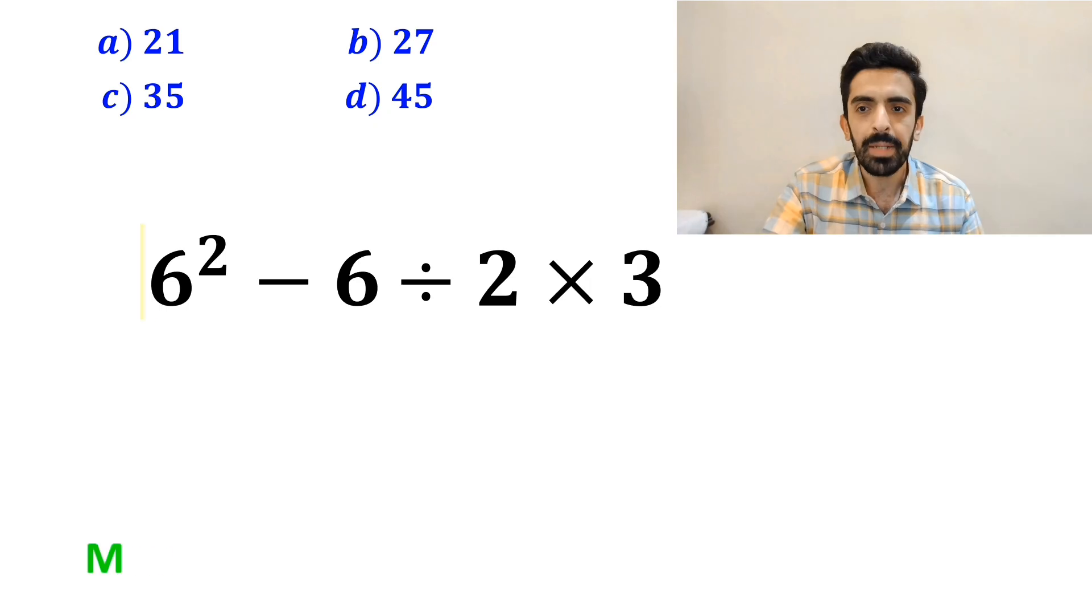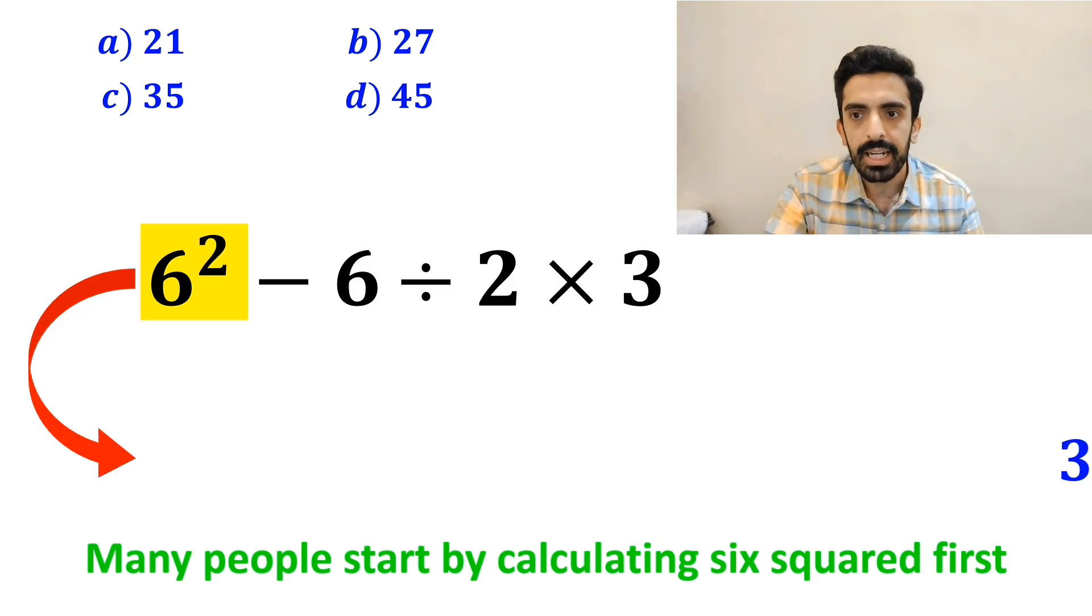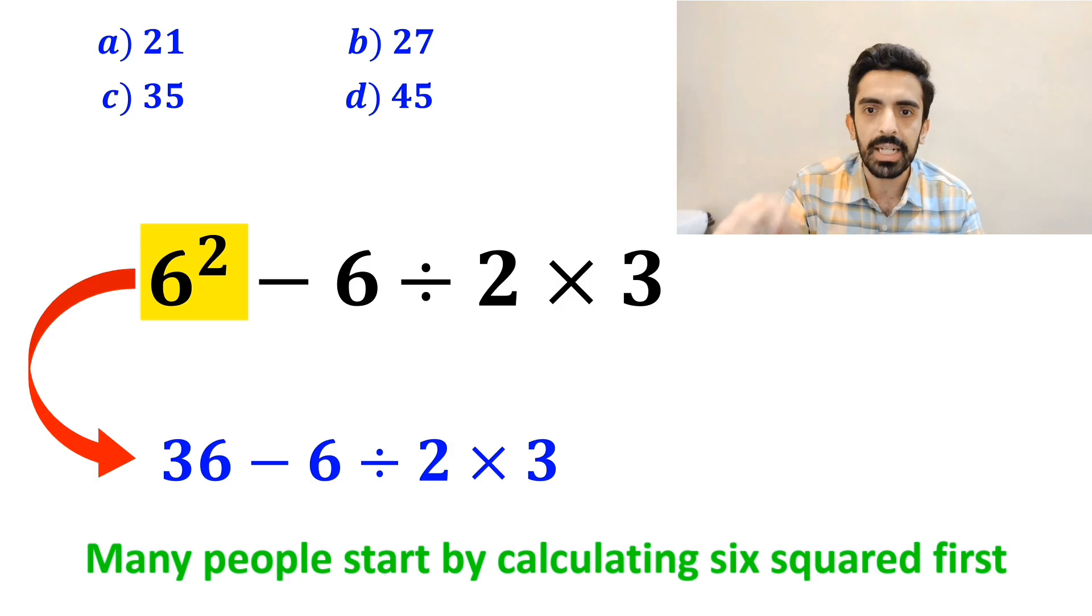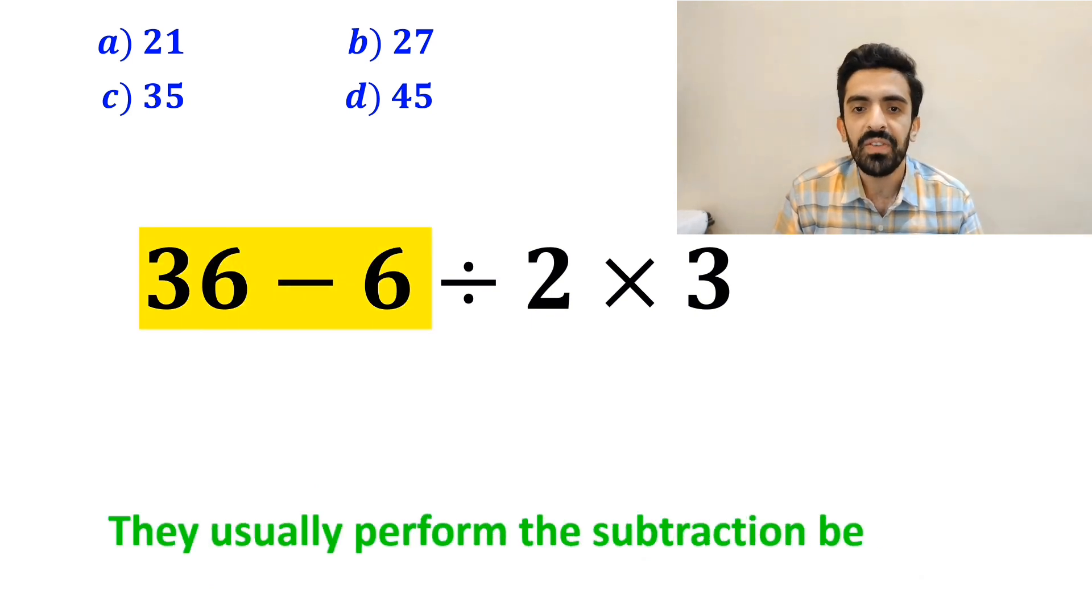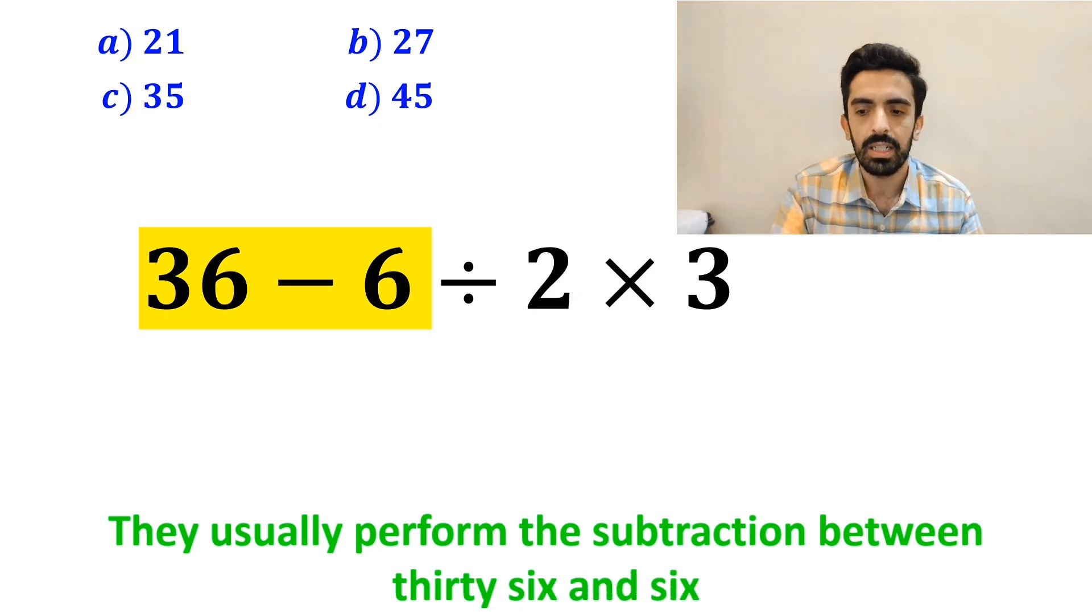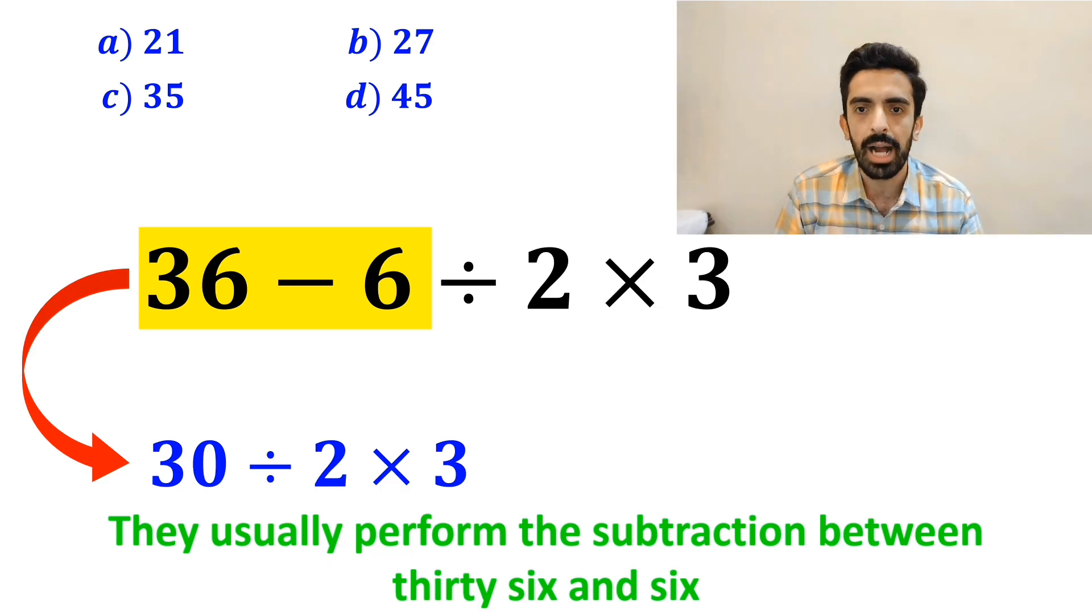To solve this problem, many people start by calculating 6 squared first. And instead of the original expression, they rewrite it as 36 minus 6 divided by 2 times 3. In the next step, they usually perform the subtraction between 36 and 6, and simplifying the expression to 30 divided by 2 times 3.